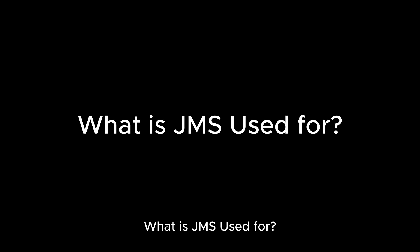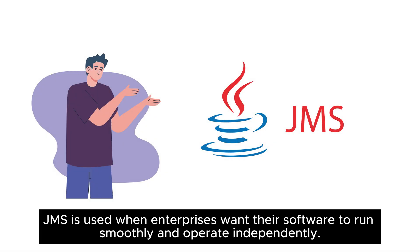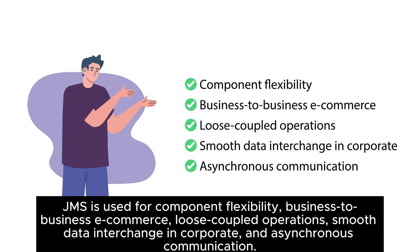What is JMS used for? JMS is used when enterprises want their software to run smoothly and operate independently. JMS is used for component flexibility, business-to-business e-commerce, loosely coupled operations, smooth data interchange in corporate environments, and asynchronous communication.